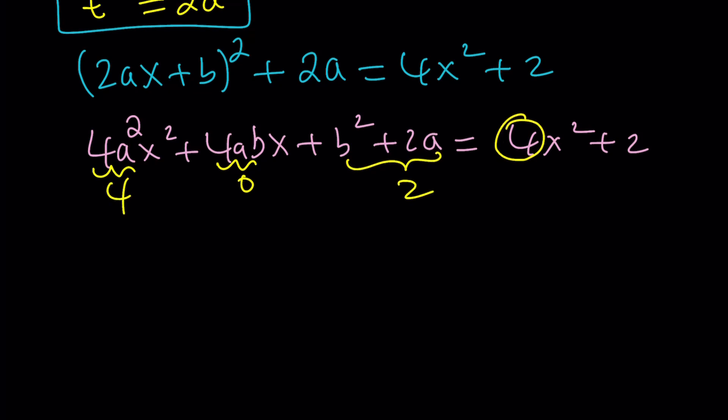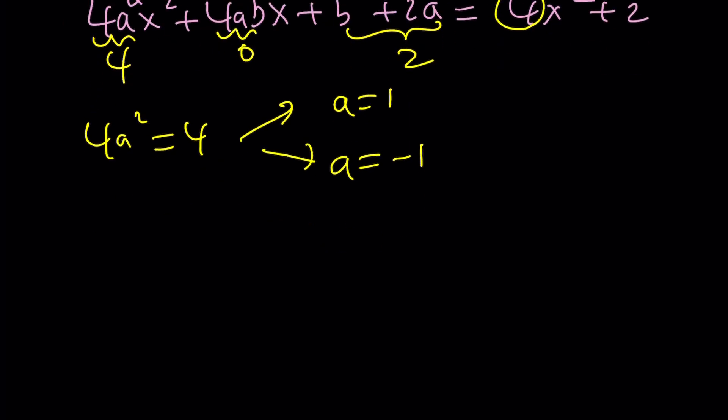So (2ax + b)² + t'', which is 2a, equals 4x² + 2. So basically, by setting these equal to each other, because these are two polynomials that are true for each value of x, their coefficients have to be the same. So when you expand this, it's going to be 4a²x² + 4abx + b² + 2a.